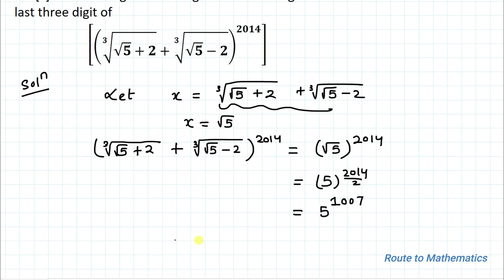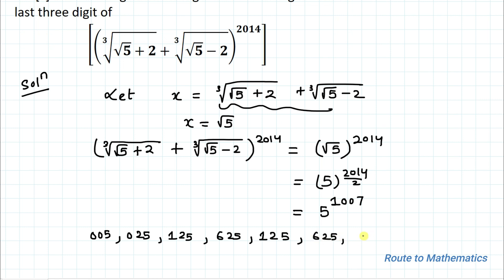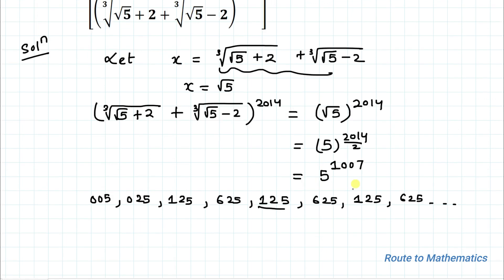We are asked to find the last 3 digits. The last 3 digits of powers of 5 follow a pattern: 5^1 → 005, 5^2 → 025, 5^3 → 125, 5^4 → 625, 5^5 → 125, 5^6 → 625, 5^7 → 125, 5^8 → 625. This pattern continues: for odd powers (≥3), the last 3 digits are 125; for even powers, 625. Since 1007 is odd, the last 3 digits of 5^1007 are 125.